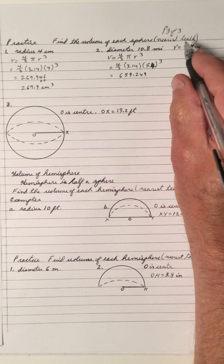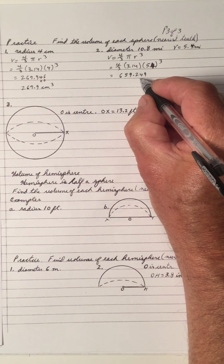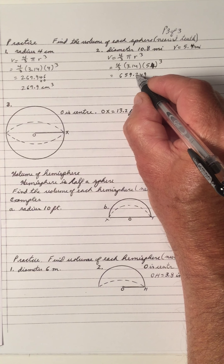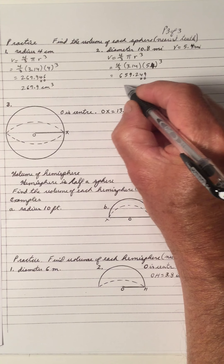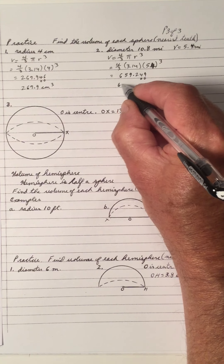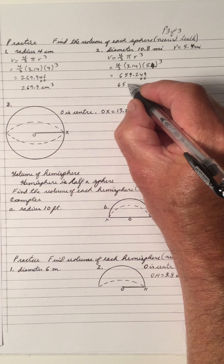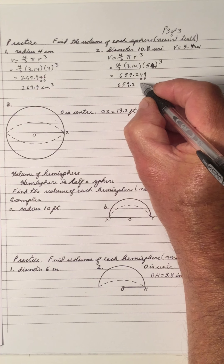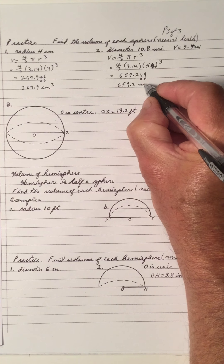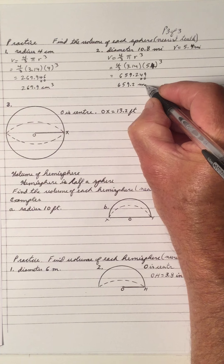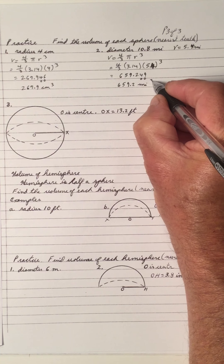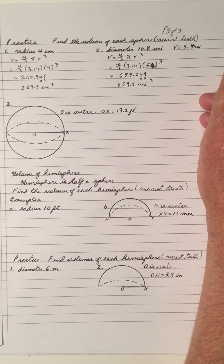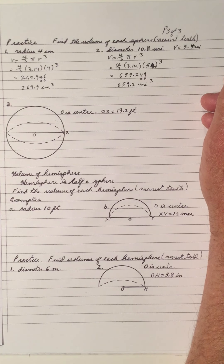Rounding to the nearest tenth — 2 is in the tenth place, and the 2 won't change because 4 is less than 5. So the volume is 659.2 cubic miles.